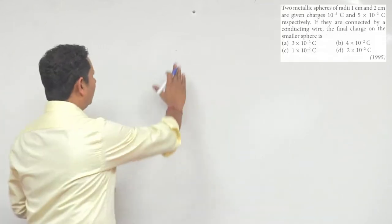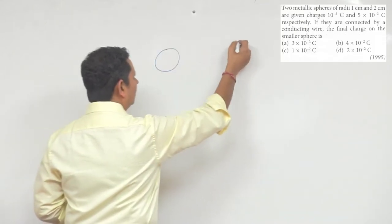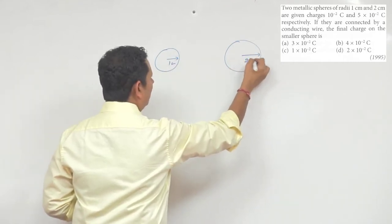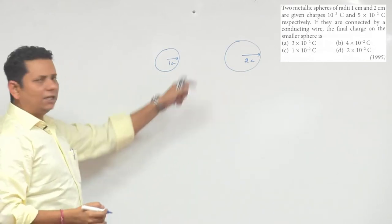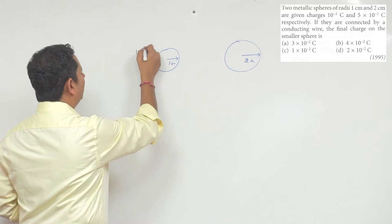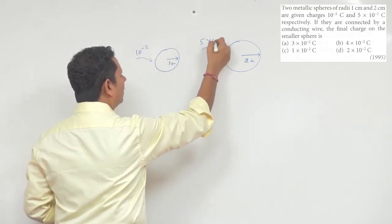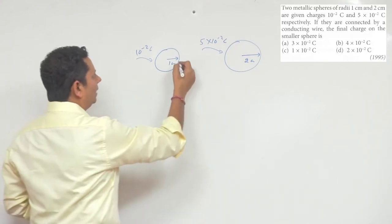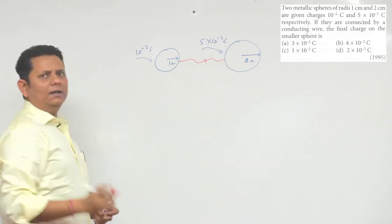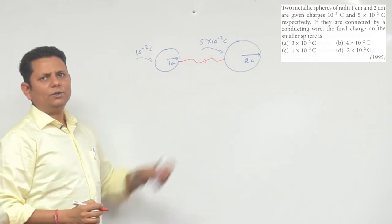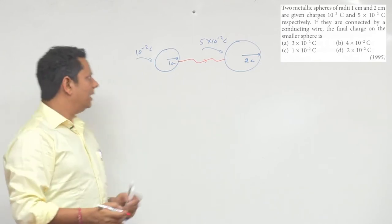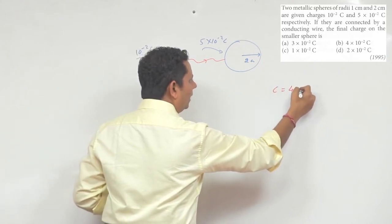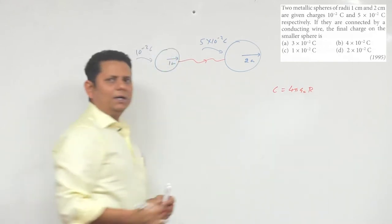Simple question. Two metallic spheres are given charges 10 to the power minus 2 and 5 into 10 to the power minus 2 coulomb. First of all, the capacitance of a metallic sphere is 4 pi epsilon-not multiplied by r.